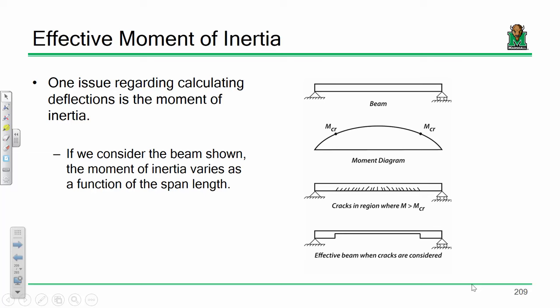Instead of using a beam with a smaller moment of inertia in the center and a bigger moment of inertia at the ends, what we do is say: here's a bigger beam (gross moment of inertia) and here's a smaller beam (cracked moment of inertia). We turn this into something in between — sort of an equivalent weighted average. That cross-section is defined by what's called an effective moment of inertia. It might look kind of like a weighted average — does that make sense?